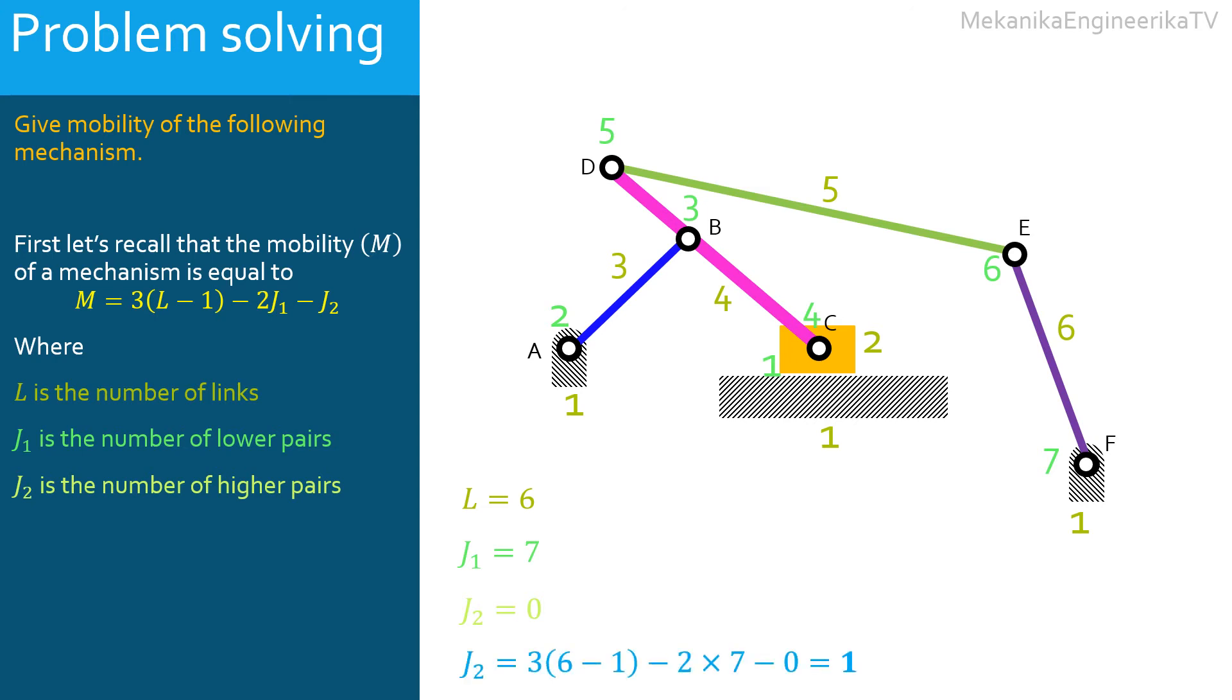Finally, mobility is equal to 3 times 6 minus 1 minus 2 times 7 minus 0, which is equal to 1. Hence, the mobility here is equal to 1. The mechanism has 1 degree of freedom.